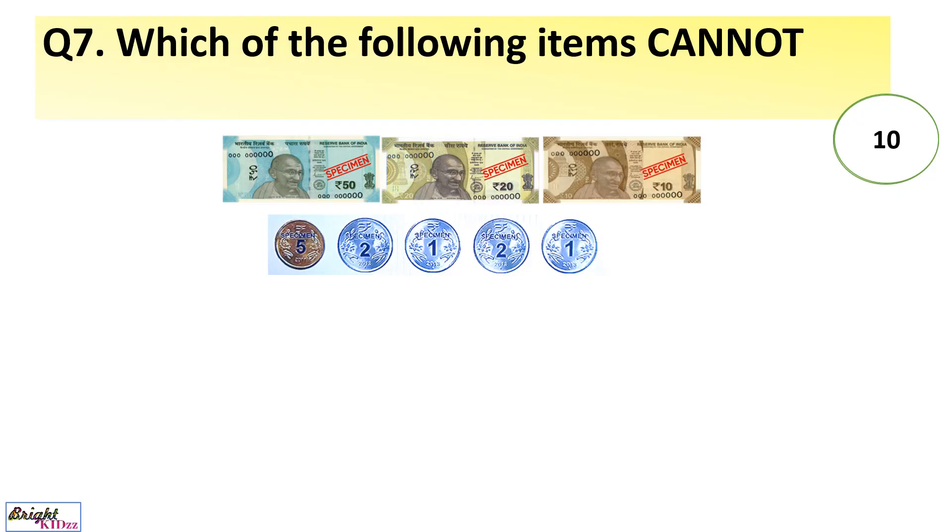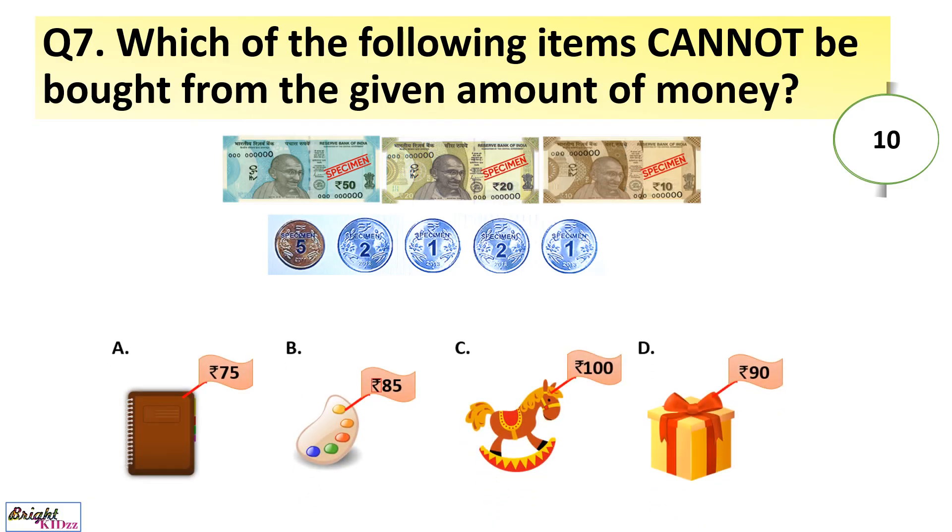Which of the following items cannot be bought from the given amount of money? Here we calculate the money which is present here, which is 50, 60, 70, 80, 85, 87, 88, 89, 90, 91. We have 91 rupees. So anything which is greater than 91 will not be bought, so it is C option which is 100.